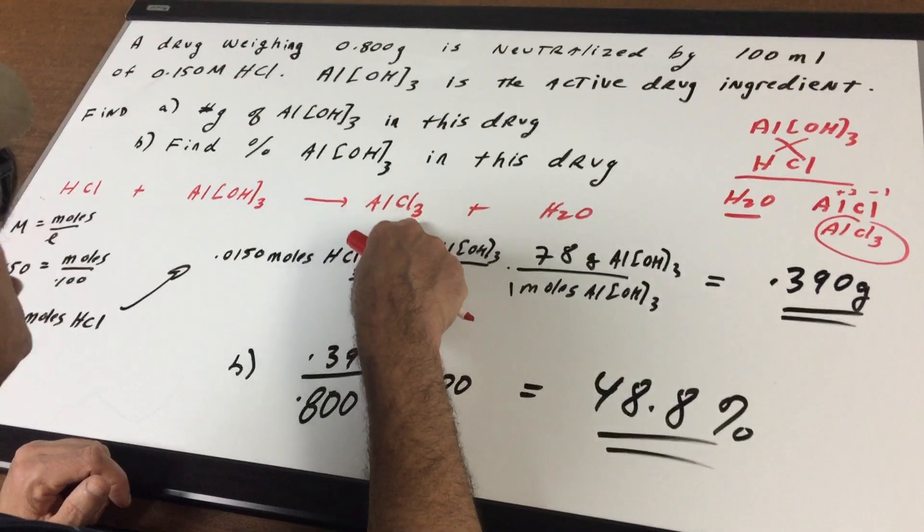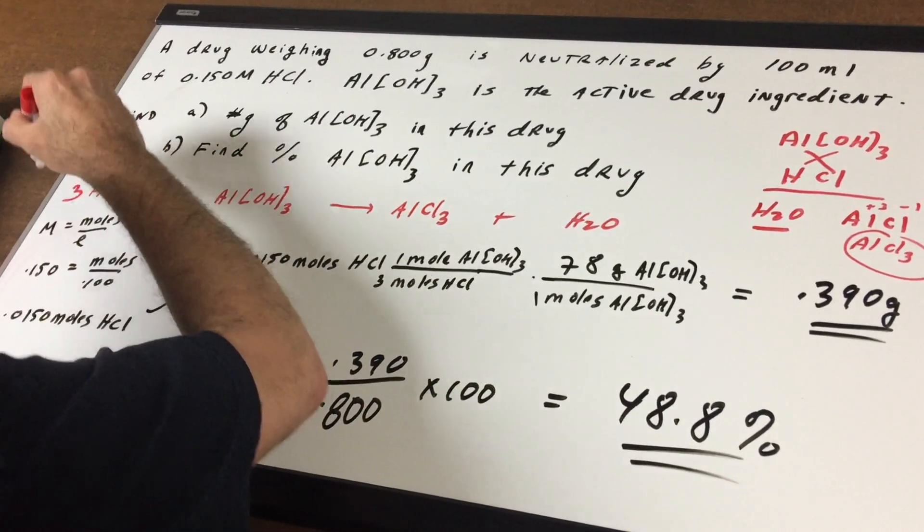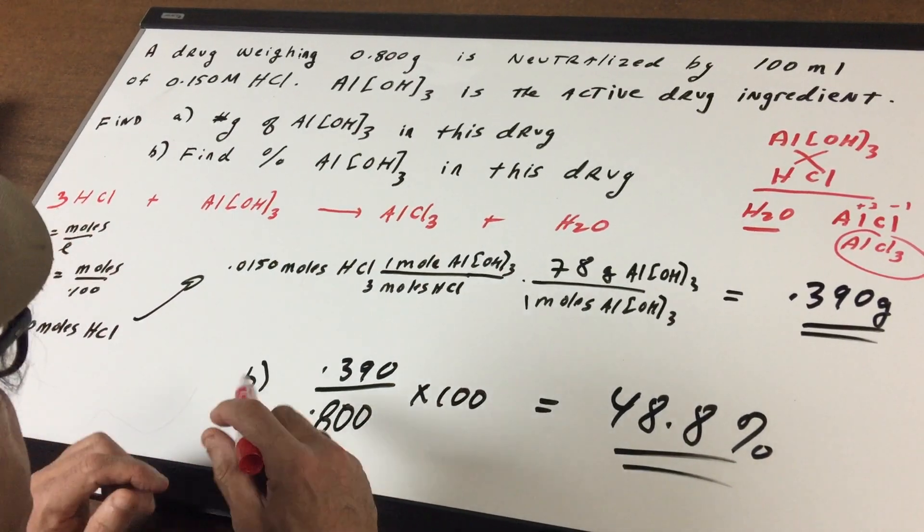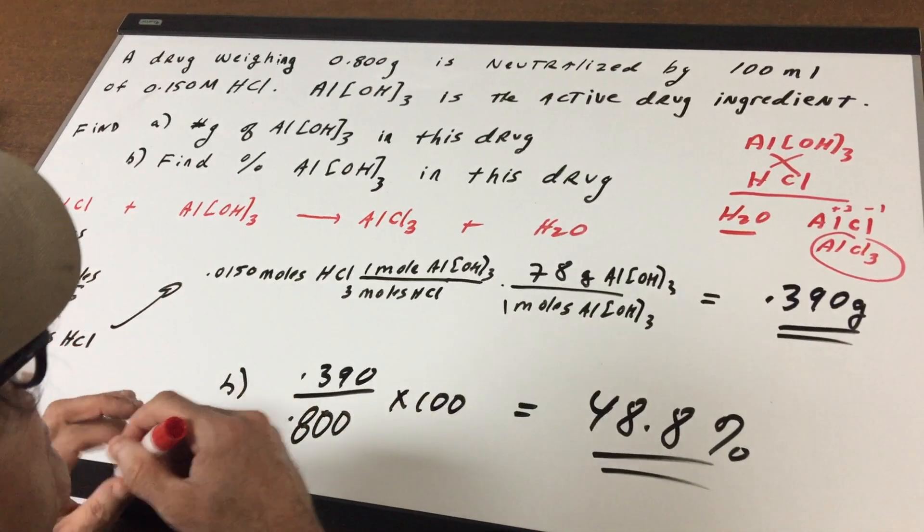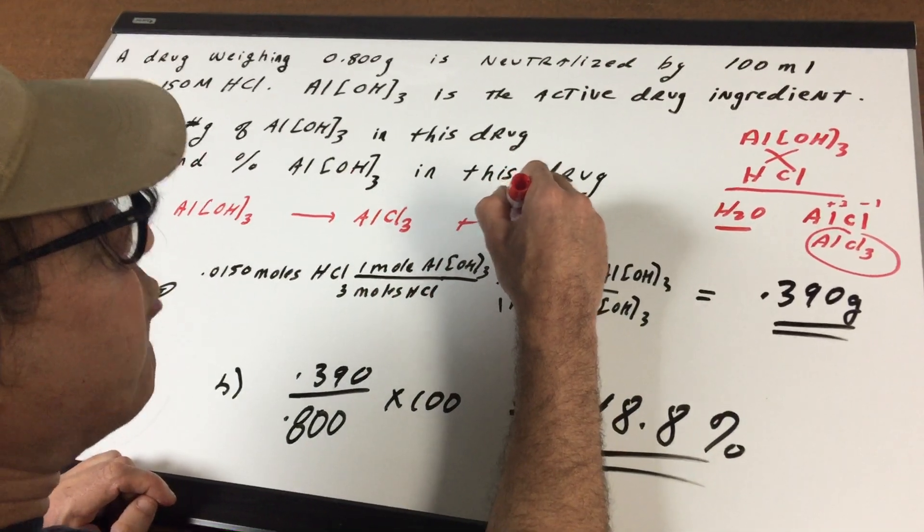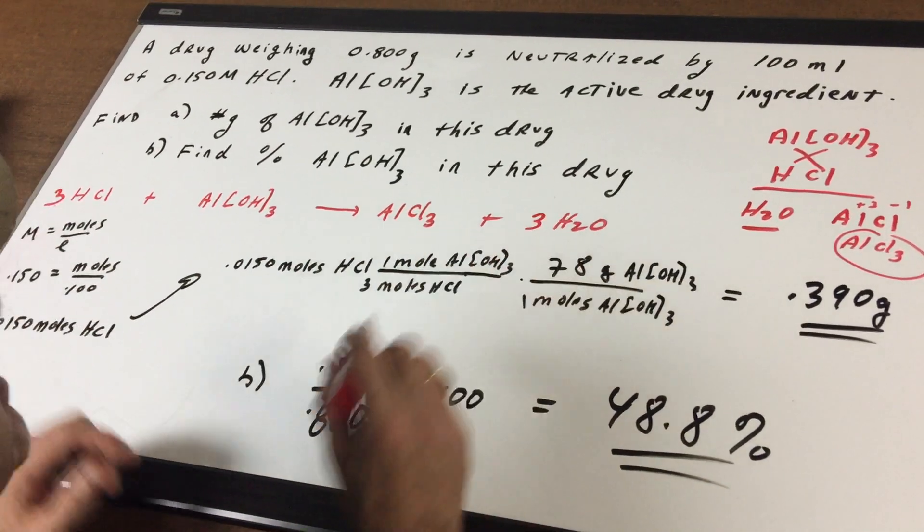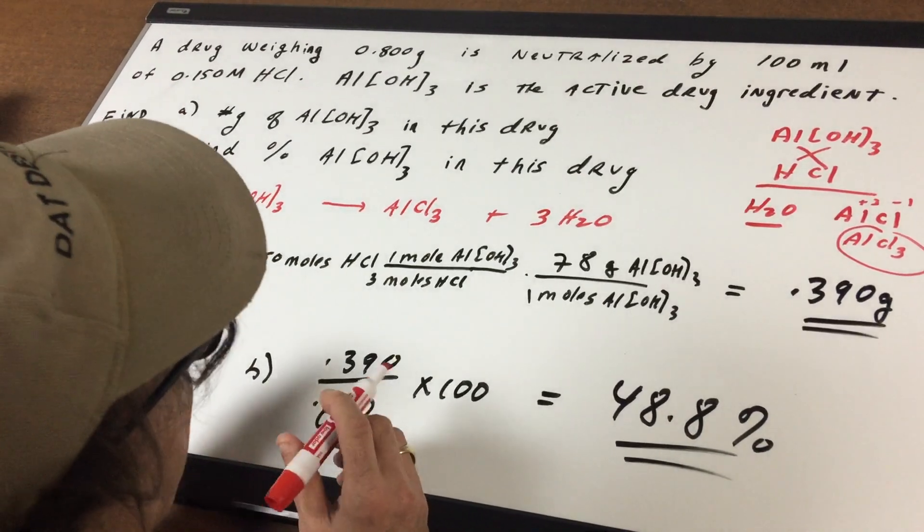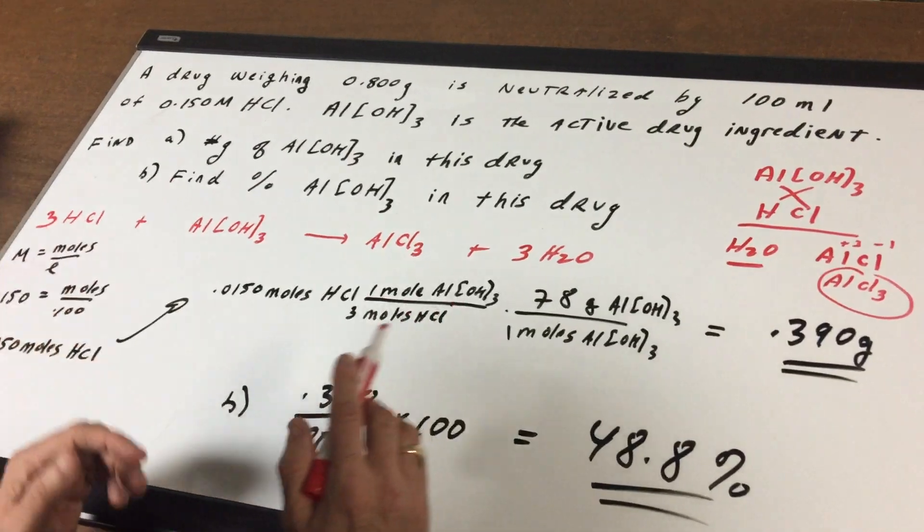Now, there is three chlorines on the right side. So I'm going to need three in front of the HCl to balance the chlorine. Now, there's three H's from here and three H's from here, which makes six H's. So I need a three to balance it out. And then there's three O's, three O's, and it's balanced. So if they didn't give you the balanced equation, that was the tough part for you to be able to write the equation and balance it.